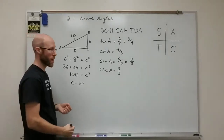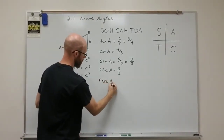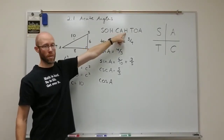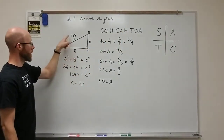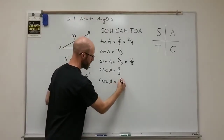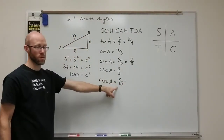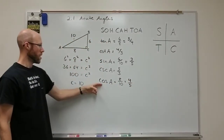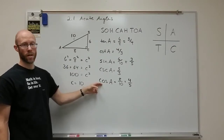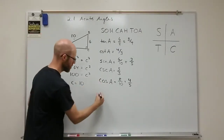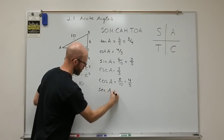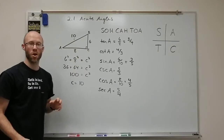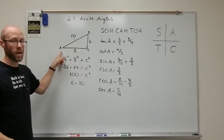The cosine of A, from SOHCAHTOA, is adjacent over hypotenuse — 8 over 10 — which reduces to four-fifths. The secant is the reciprocal of the cosine, so the secant of A is five-fourths. That gives us all six trig functions for angle A.